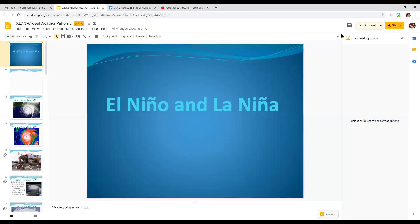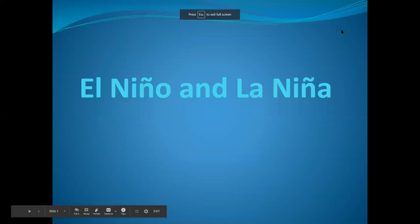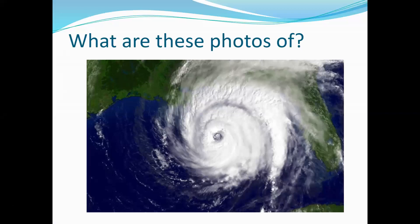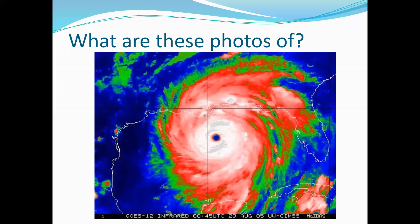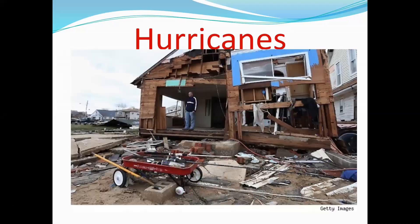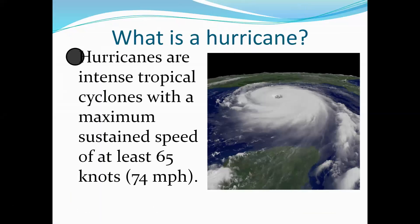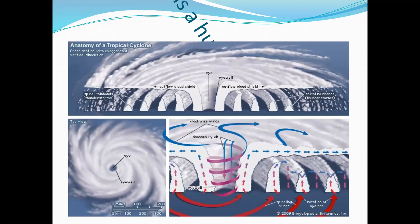Going back — El Niño and La Niña are the weather patterns that occur in the Pacific Ocean. Now look at these photos. What are these pictures of? If you said hurricanes, you are correct. So what is a hurricane? A hurricane is an intense tropical cyclone with a maximum sustained speed of at least 65 knots or 74 miles per hour.